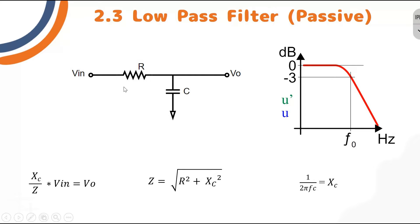This circuit has a frequency response that looks like this. Here on the x-axis we have frequency, on the y-axis we have decibel, and this is the curve of low pass filter. F naught here is the cutoff frequency.